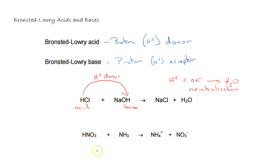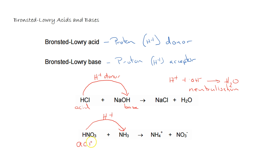If we look at our next example, we've got HNO₃ plus NH₃, making NH₄⁺ and NO₃⁻. So the HNO₃ is donating the hydrogen ion here. The nitric acid is acting as the acid, and the NH₃ is acting as the base because it is the one accepting the proton.